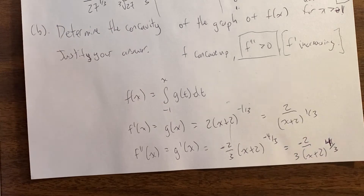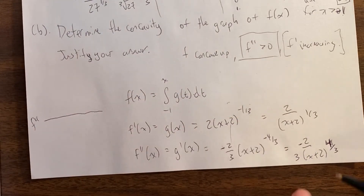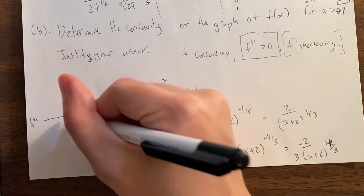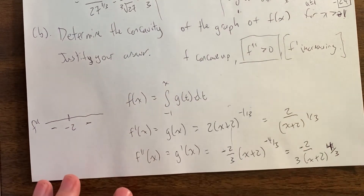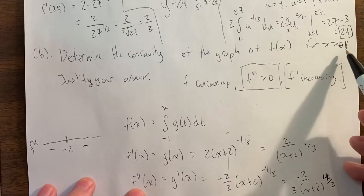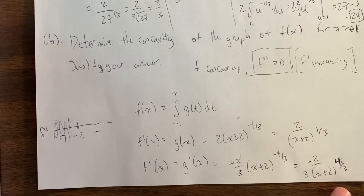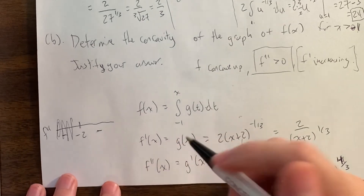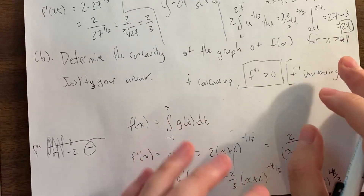Now I need to see whether this is positive or negative. The thing to do is to first change it back to a fraction: negative two-thirds over (x+2) to the four-thirds, because the negative sign goes away when we bring it to the denominator. Now what does the sign chart look like? When you have a sign chart of a fraction, you just graph the zeros. The only potential sign change is at x = -2. When you plug in any number to the right of -2, you're raising (x+2) to the fourth power, so that's always positive. So this function is negative for every x greater than -1. For example, let x = 0: (0+2) to the four-thirds is some positive number; divided into -2/3 gives a negative value. So f double prime is negative on this interval.